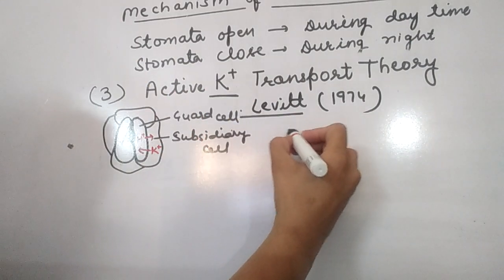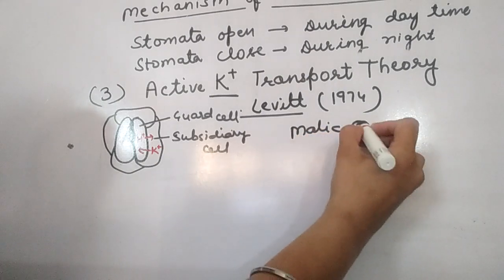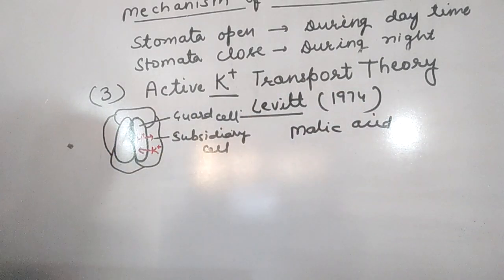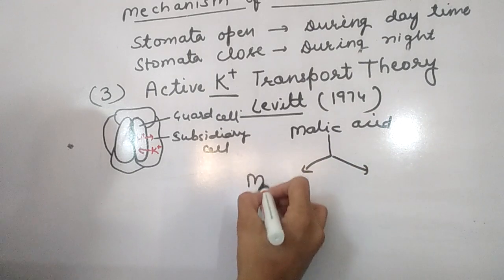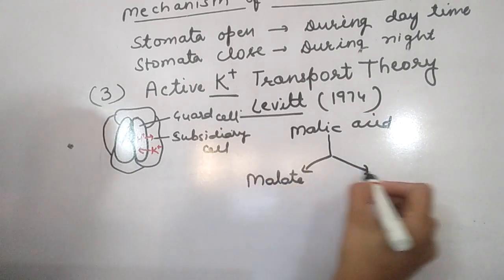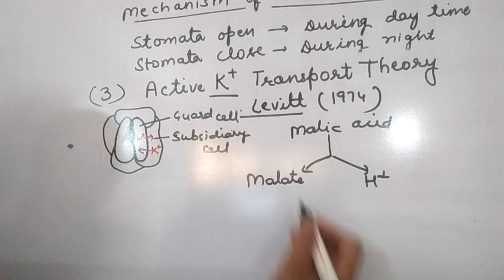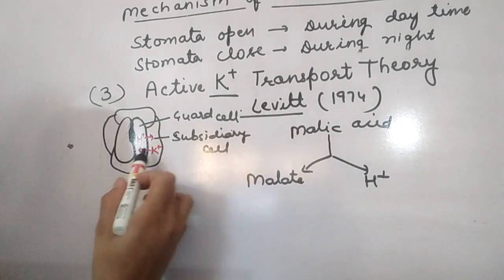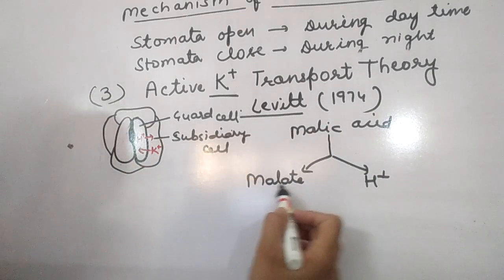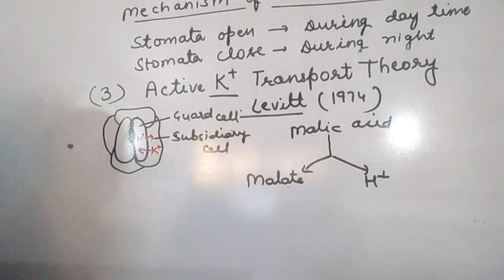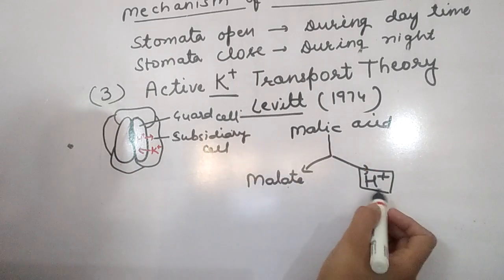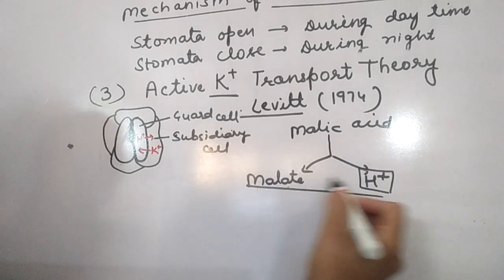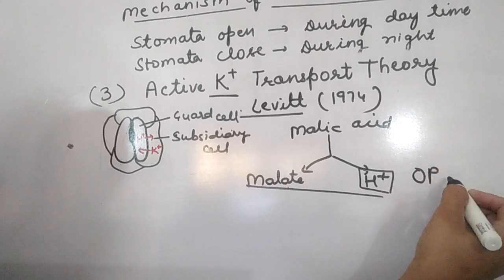During daytime, malic acid is formed in the guard cell. Malic acid is highly reactive — it breaks into malate ions and H⁺ (protons). So in the guard cell, both malate and H⁺ are present, raising the osmotic pressure.